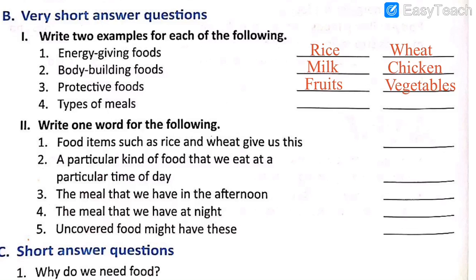Number four — types of meals: we have three meals in a day — breakfast, lunch, and dinner. From those three, write any two examples: lunch and dinner. So the third question — write two examples — is complete: energy giving foods are rice and wheat, body building food is milk and chicken, protective food is fruits and vegetables, and types of meals are lunch and dinner.